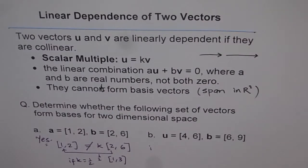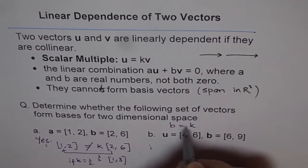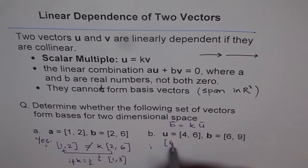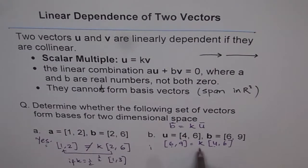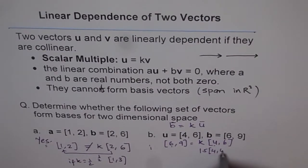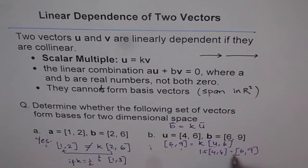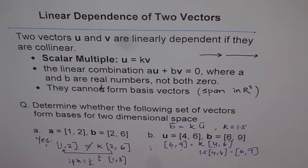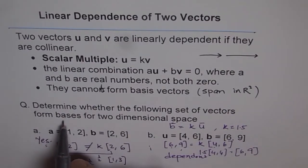Now let's do the same test for the second set. Can they form a basis? Let's write b as equals to k times u. So b is (6, 9) and I want it written as k times (4, 6). To get 6 from 4, k should equal 1.5. If I put k as 1.5: 1.5 times 4 is 6, and 1.5 times 6 is 9. That is correct. So we do have k equals 1.5, which gives us vector b. That means these vectors are dependent, and so they cannot form a basis for two-dimensional space. The answer is no.